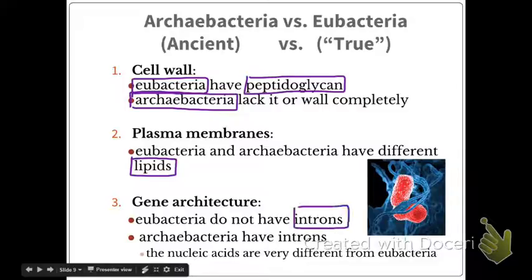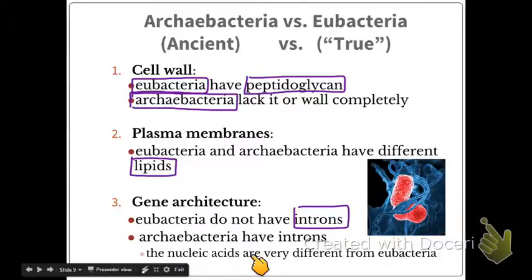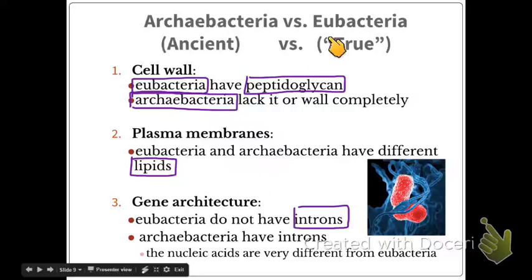Gene architecture: eubacteria do not have introns, while archaeobacteria do. Introns are just sections of DNA that carry no coding information. The nucleic acids are very different between the two. This is one more reason why they no longer exist under the same domain — bacteria used to be its own kingdom, but then it was split into three domains and six kingdoms.